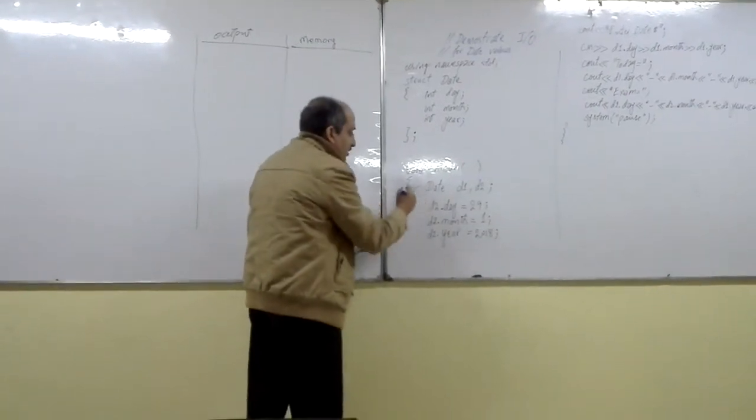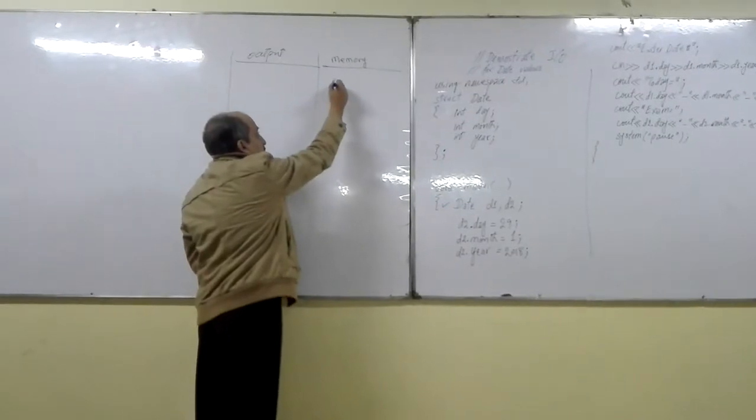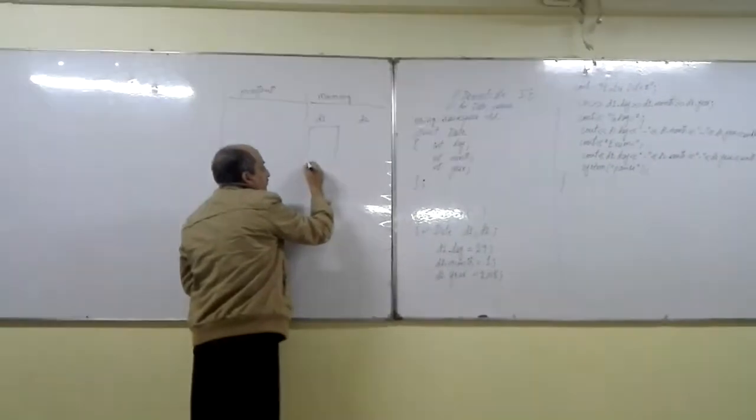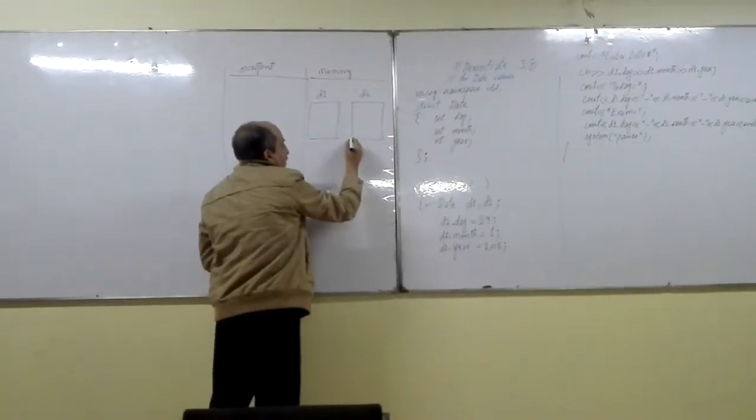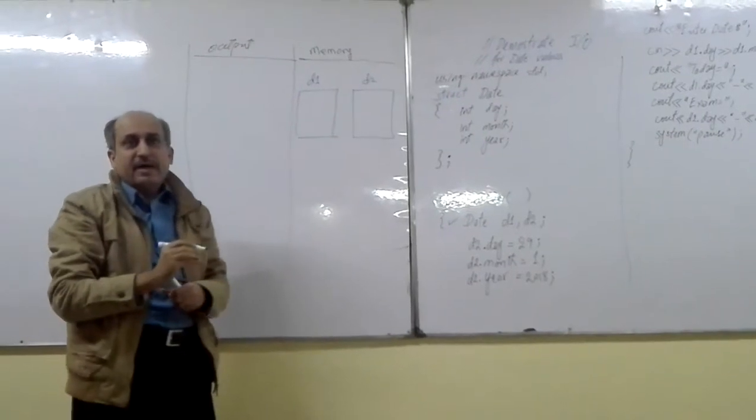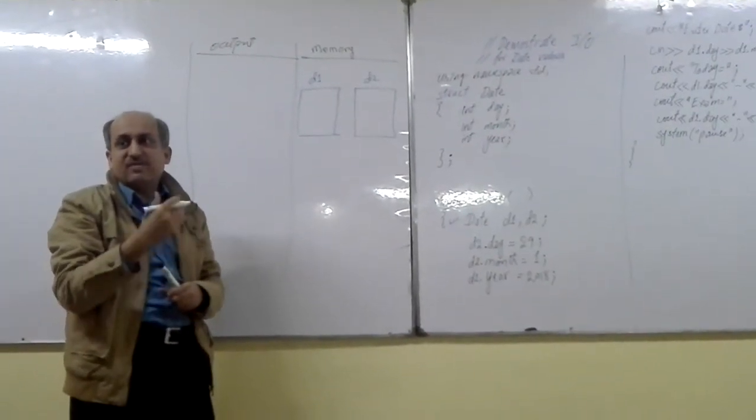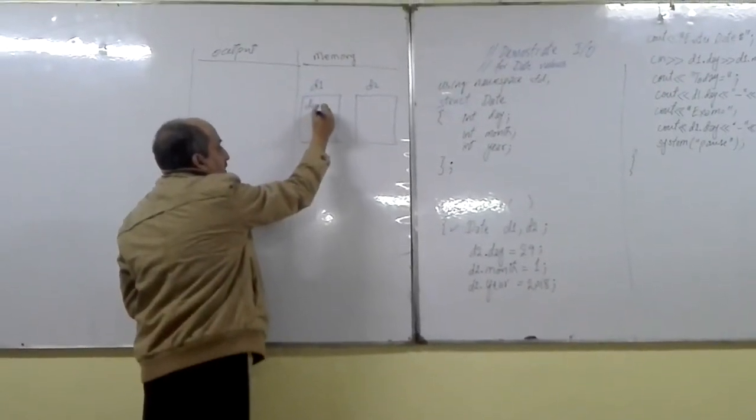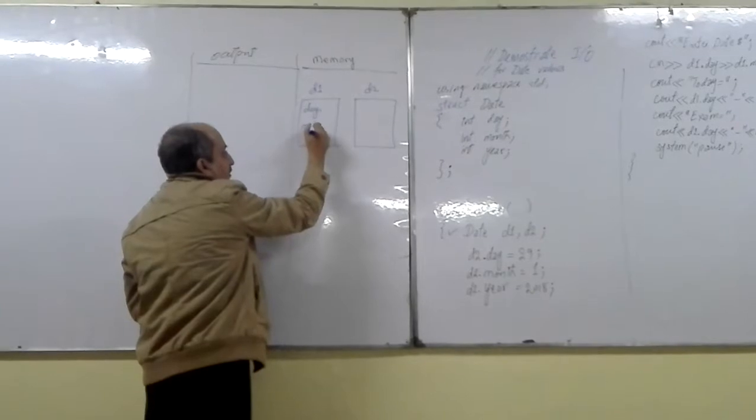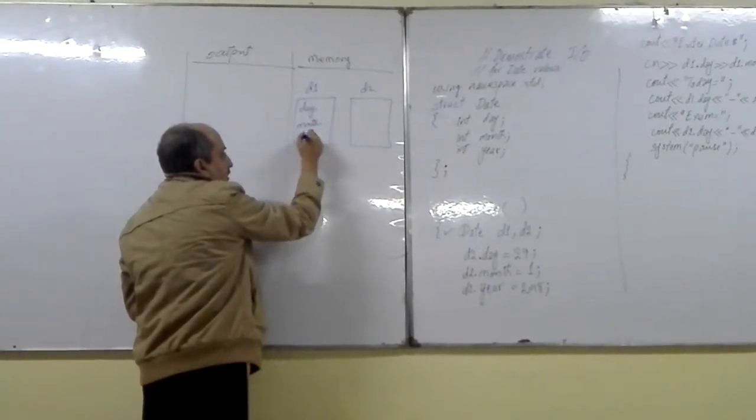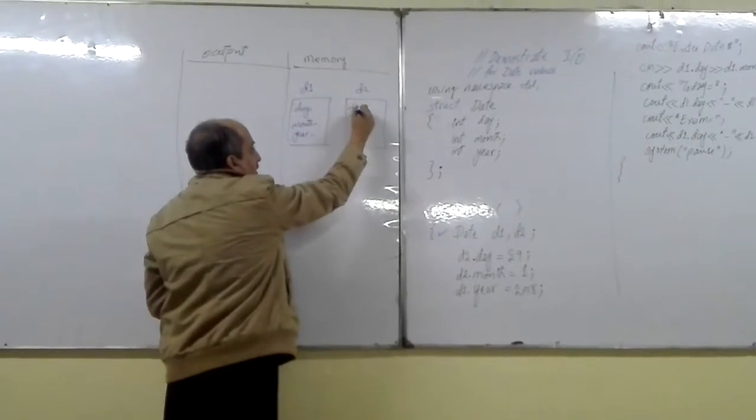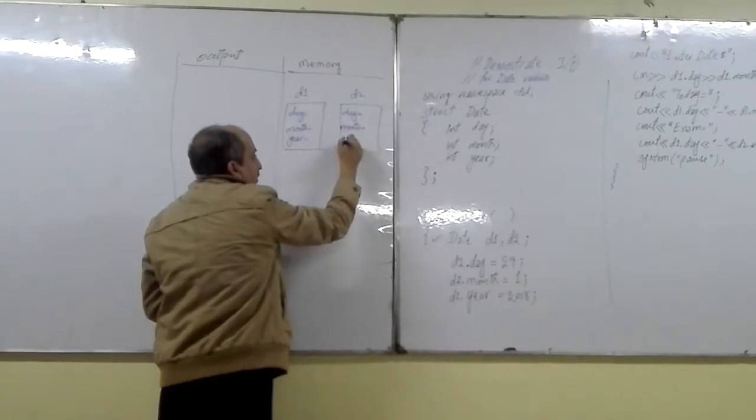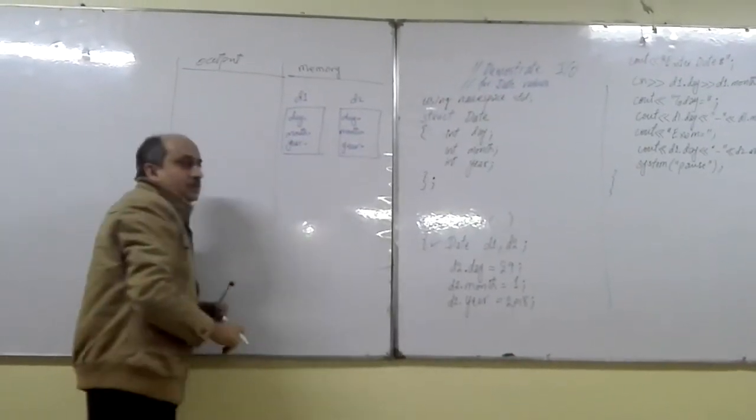When this line is executed, what will happen in memory? Two variables in memory will be created and both of them have three internal variables inside them with the names day, month, and year. Then D1 also has day, month, and year. Then D2.